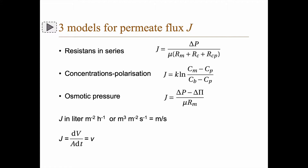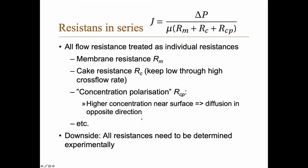R_c is the cake resistance — if a cake forms, that is also a resistance, and there may be other resistances as well. For concentration polarization, J equals a mass transfer coefficient times the natural logarithm of (C_m minus C_p) divided by (C_b minus C_p), where C_m is the concentration near the surface and C_b is the bulk concentration on the feed side. In the osmotic pressure model, J equals (delta P minus delta pi) divided by viscosity times R_m.